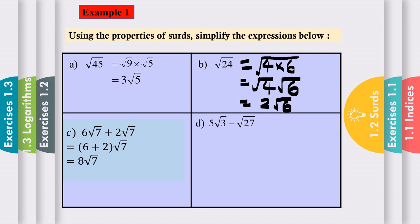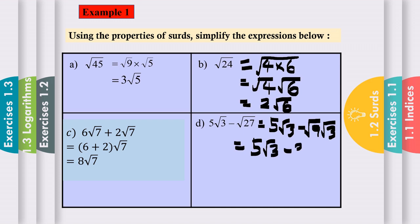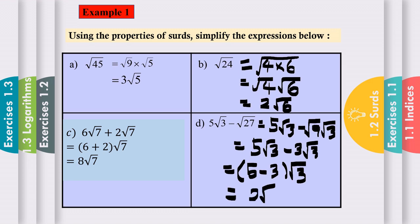Example d: 5 square root 3 minus square root of 27. We can simplify square root of 27 into two numbers — square root of 9 times square root of 3. Because square root of 9 is 3, we simplify to 5 square root 3 minus 3 square root 3. Factorizing the square root 3 gives (5 minus 3) square root 3, so the last answer is 2 square root 3.